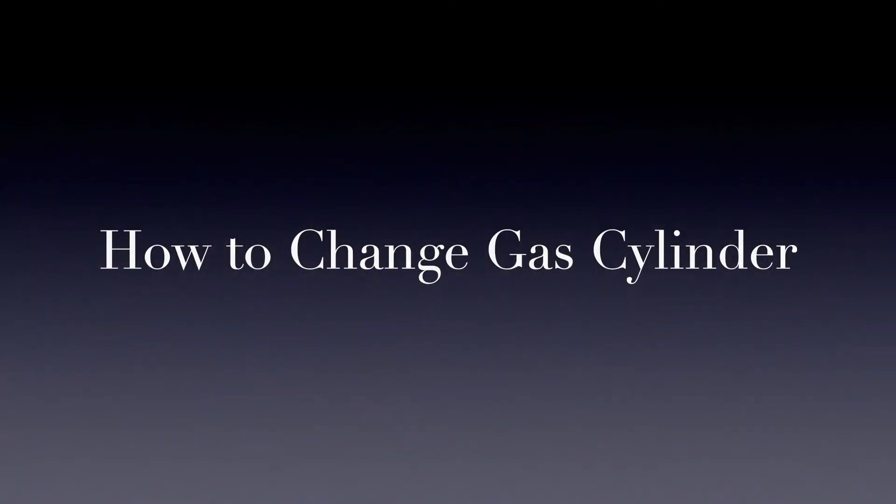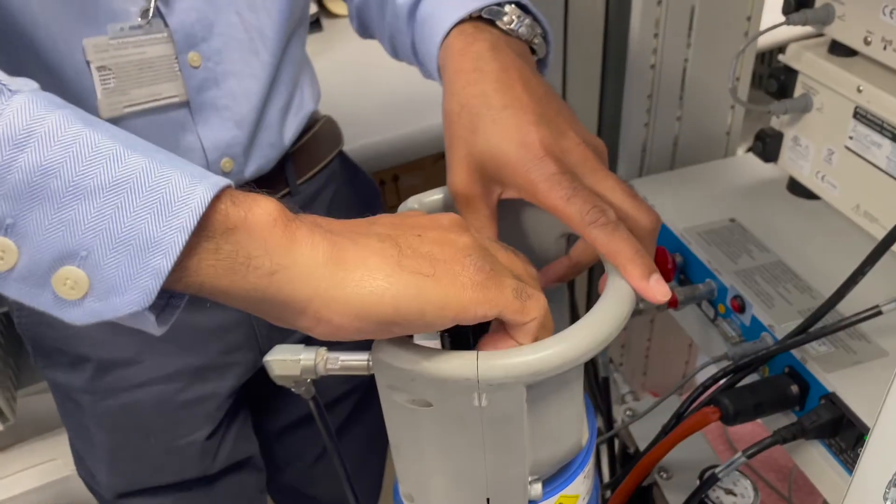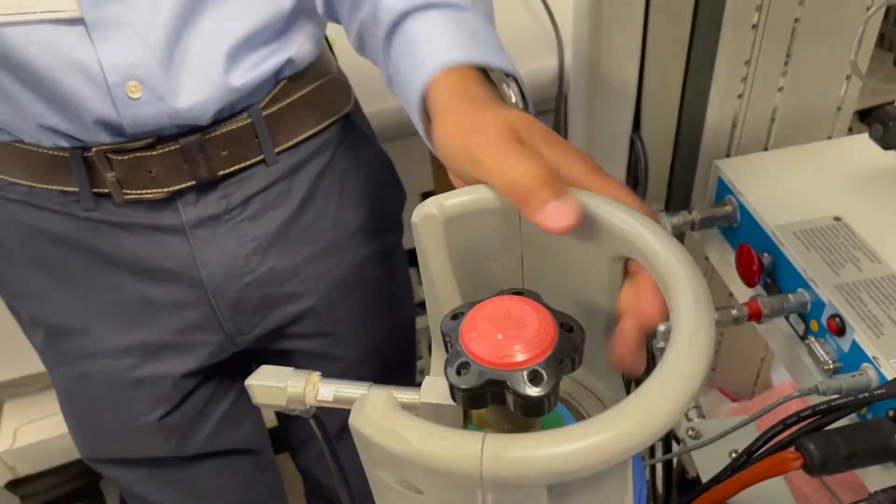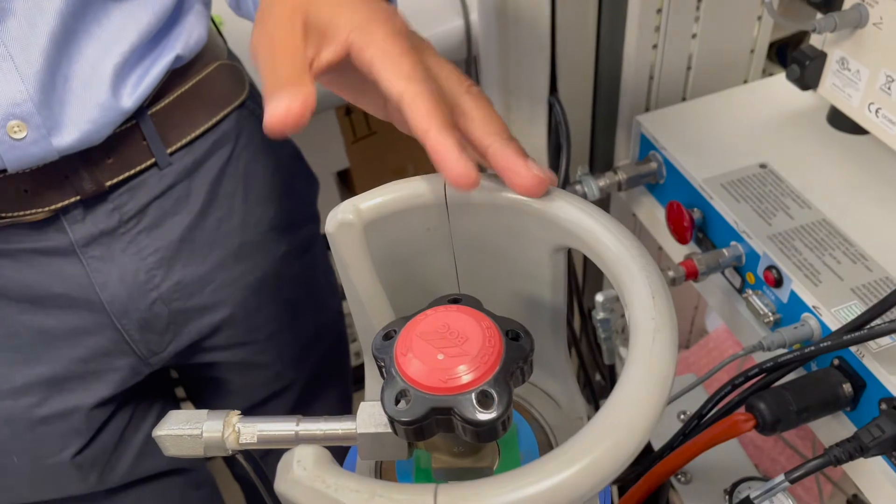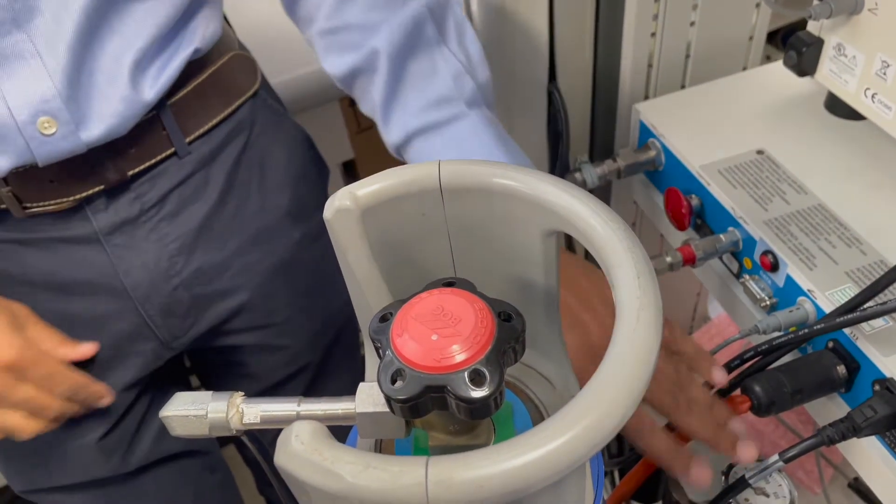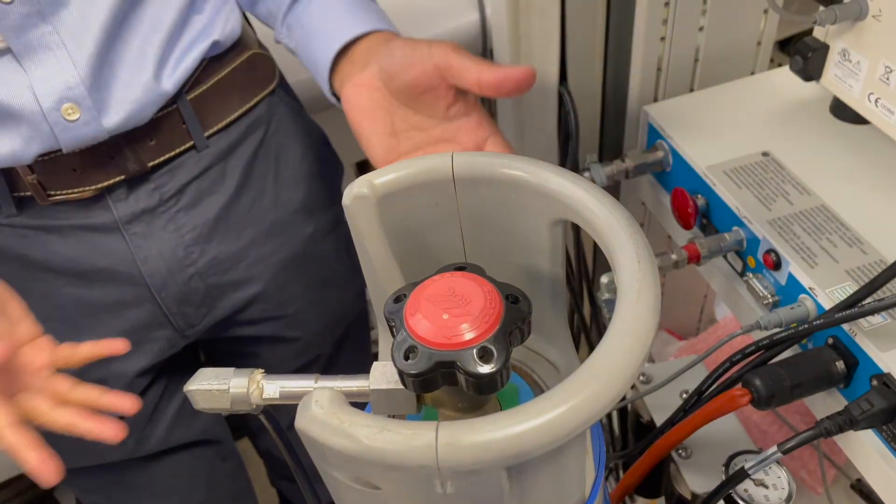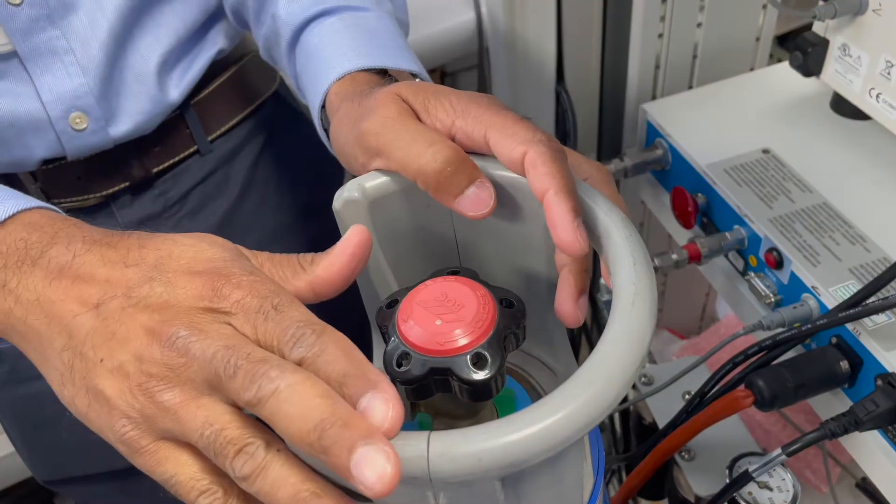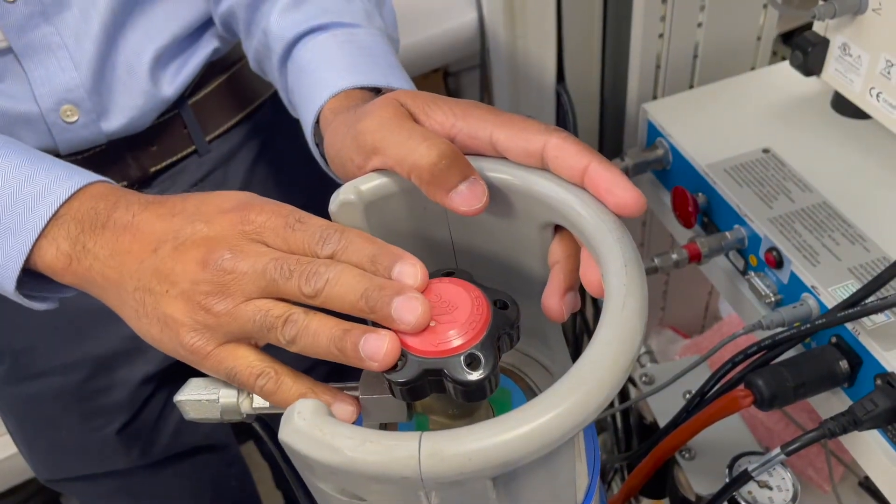First thing you're going to do is turn the gas off because the machine, let's say for example you're doing it in theatre, surgeon says not working, you have a quick look at the pressure, the pressure is below 800, you want to change the gas bottle. The gas bottle at that point will be opened, so just turn the gas bottle off.